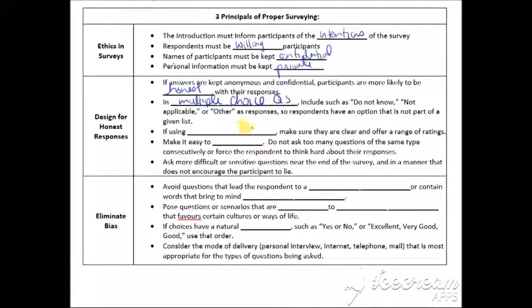If answers are kept anonymous and confidential, participants are more likely to be honest with the responses. And multiple choice questions, include such as do not know, not applicable or other, like those other responses as responses. So respondents have an option that is not part of a given list. If using rating scales, make sure they're clear and offer a range of ratings. So from zero to 10 or like extremely like, do not like, right? That's a rating scale. So just offer a range of ratings.